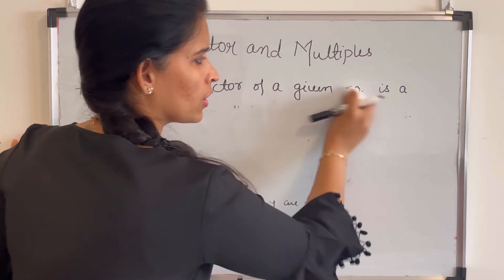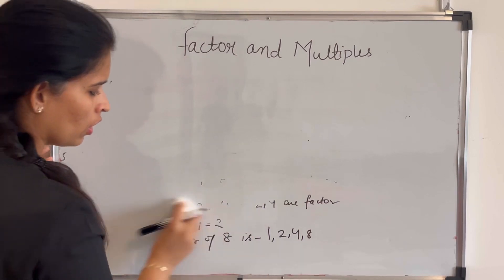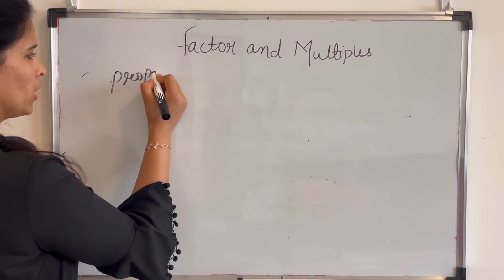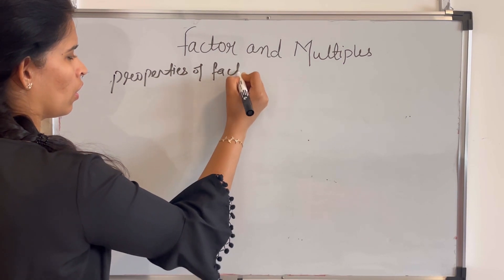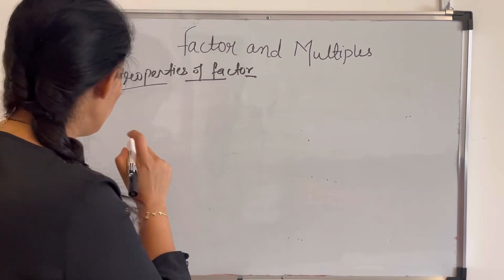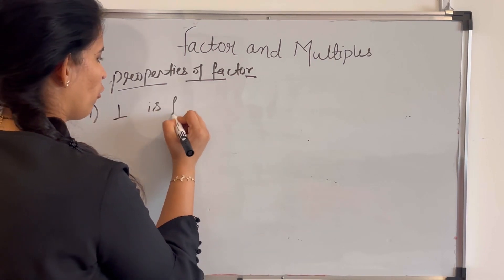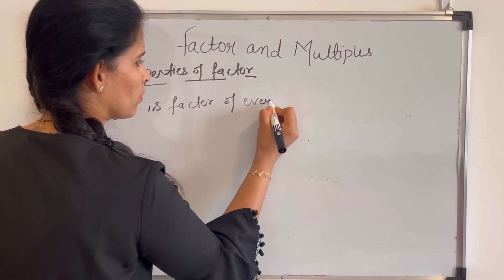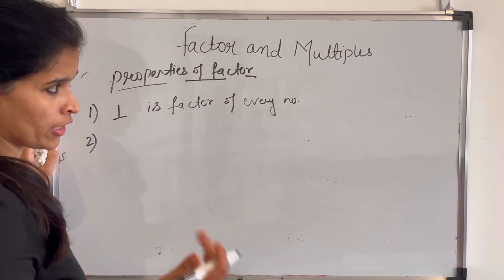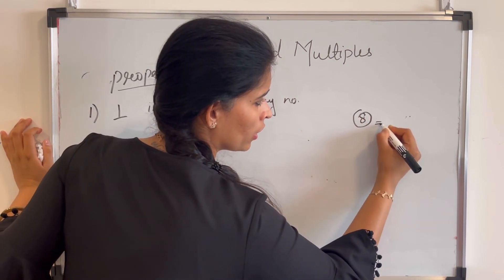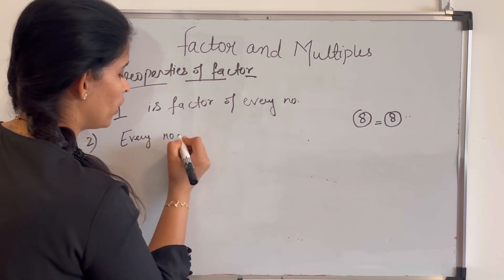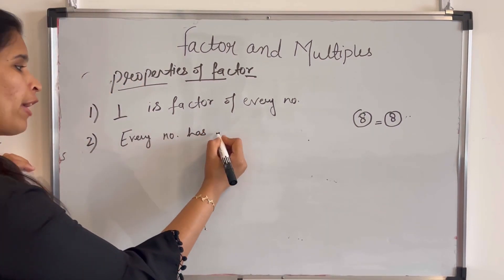Now we will understand the properties of factors. The first property is: 1 is a factor of every number. The second property is: every non-zero number is a factor of itself — for example, when finding the factors of 8, 8 itself is one of its factors. So every number has itself as a factor.